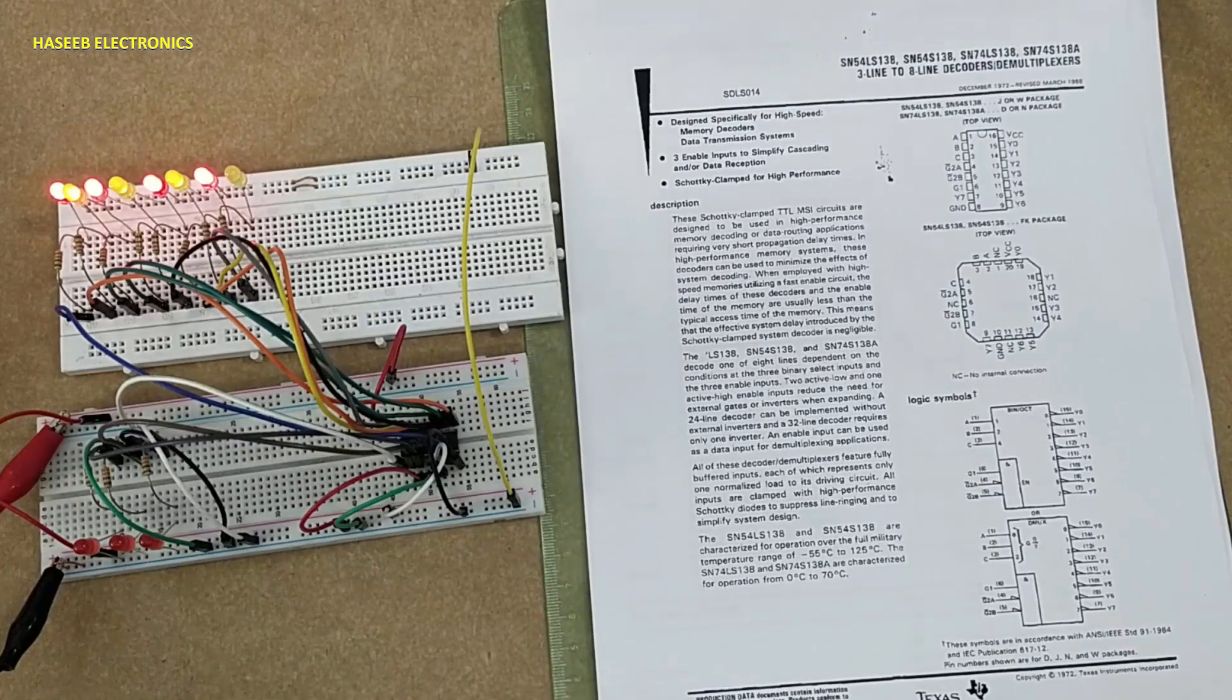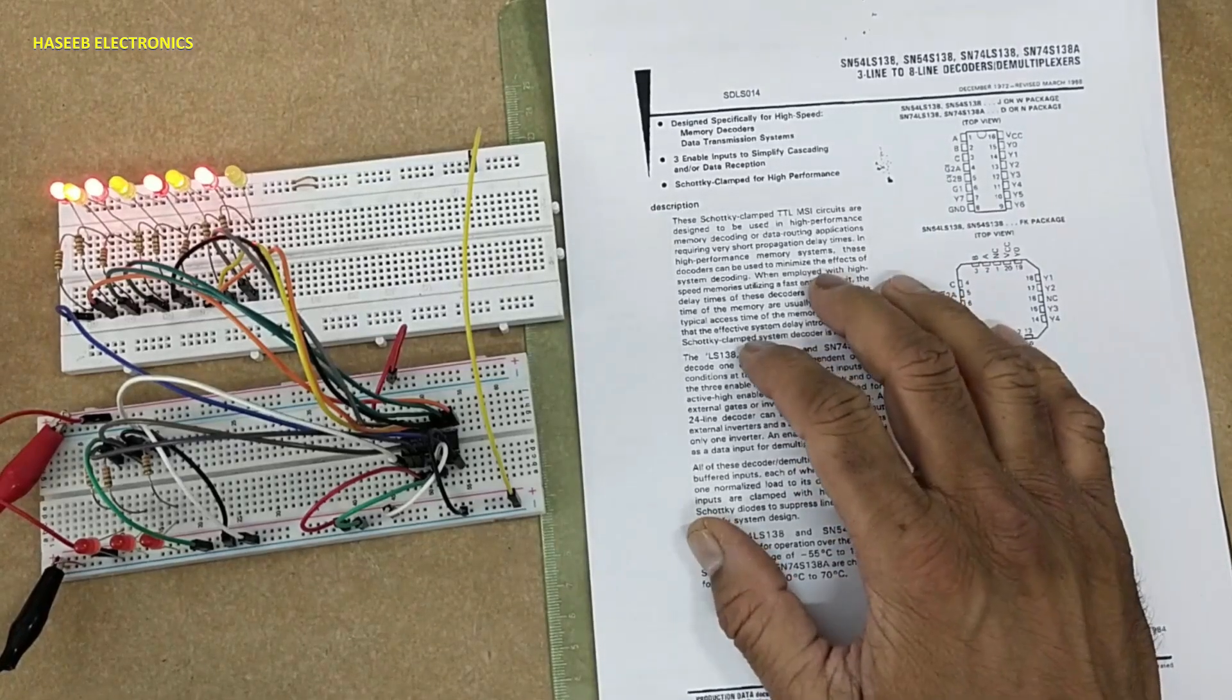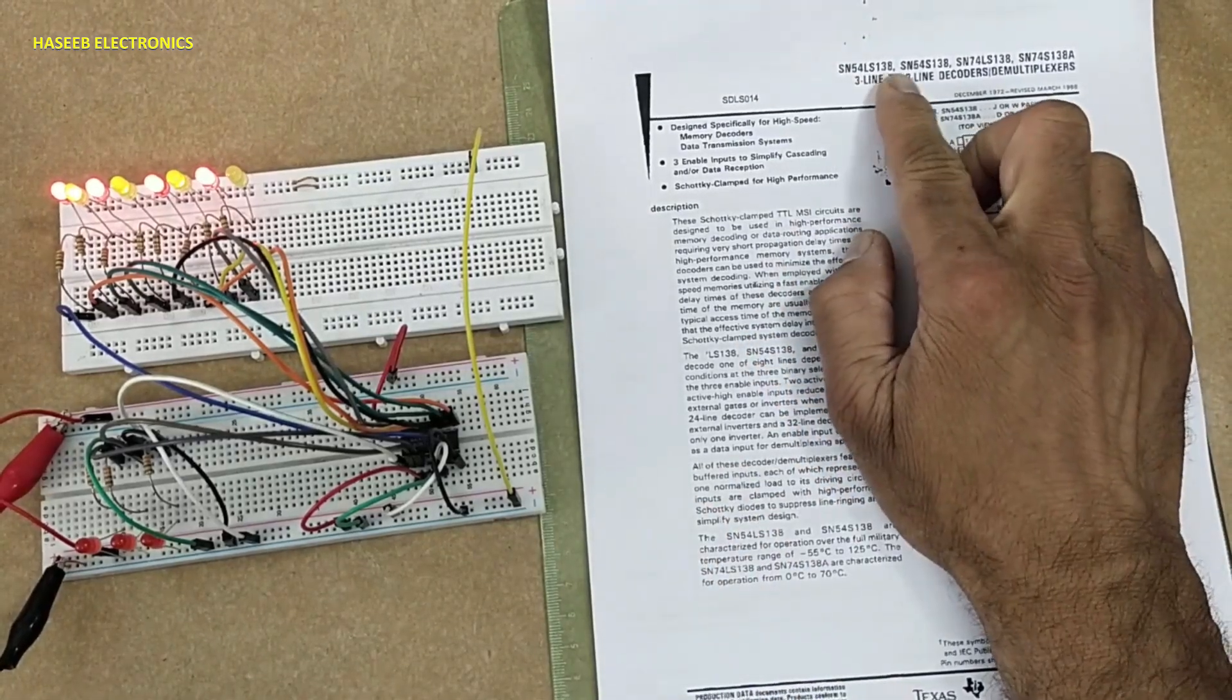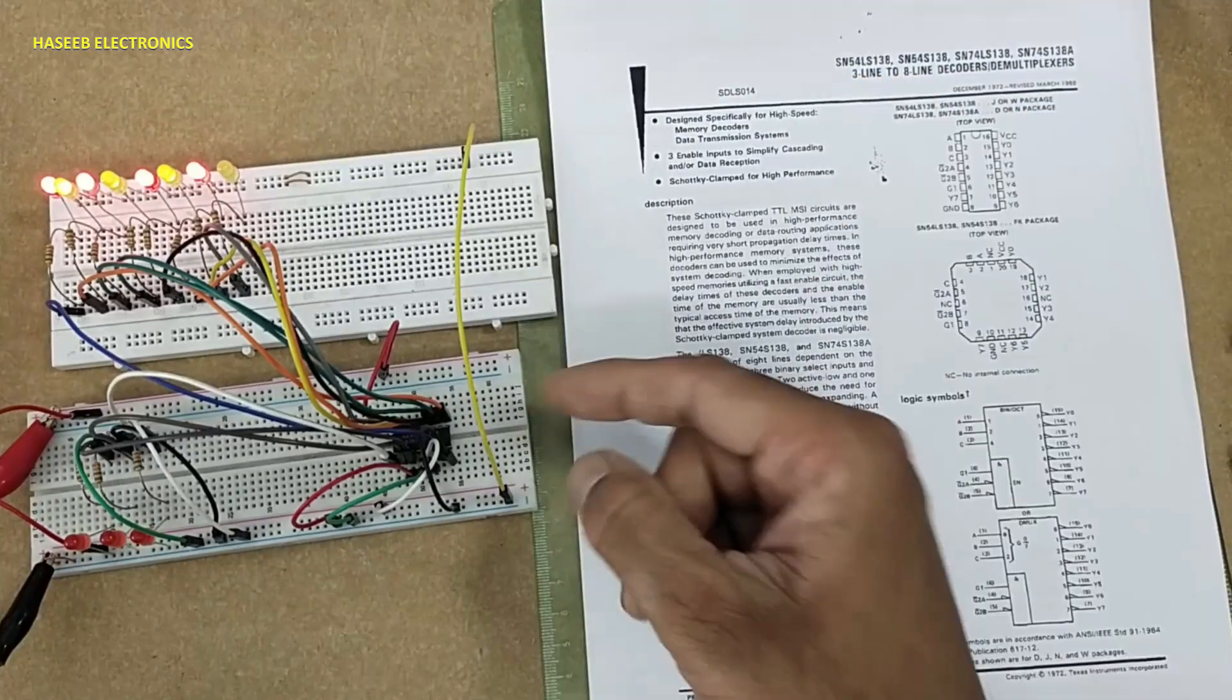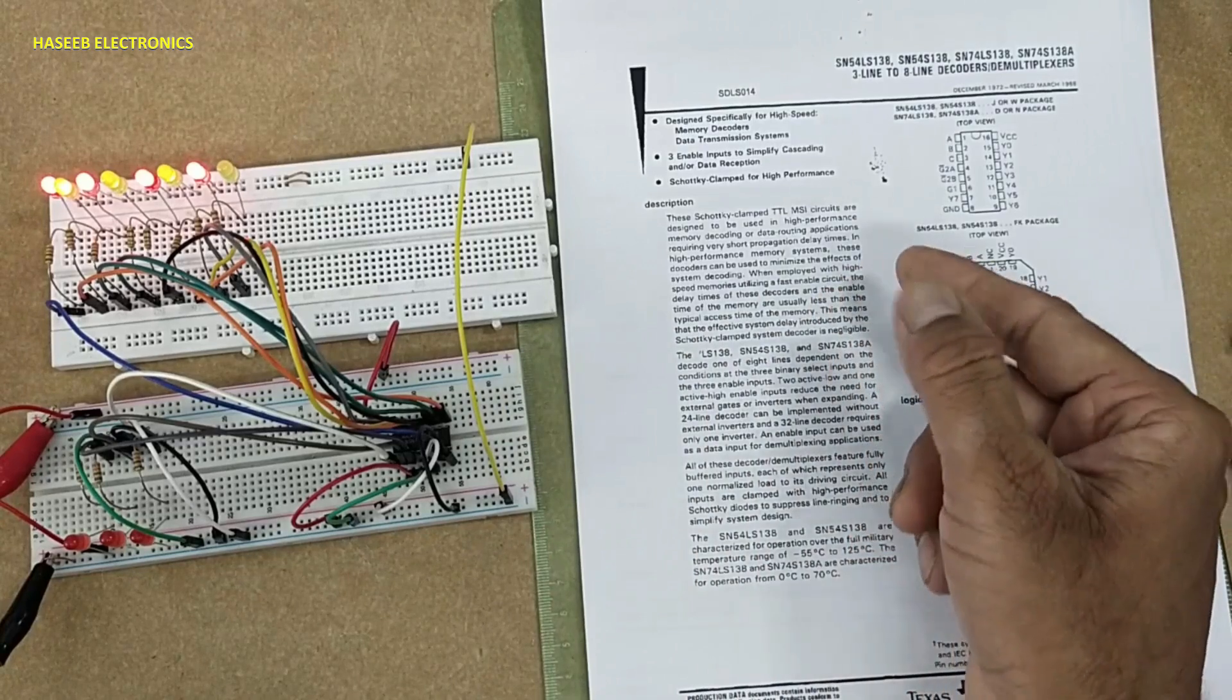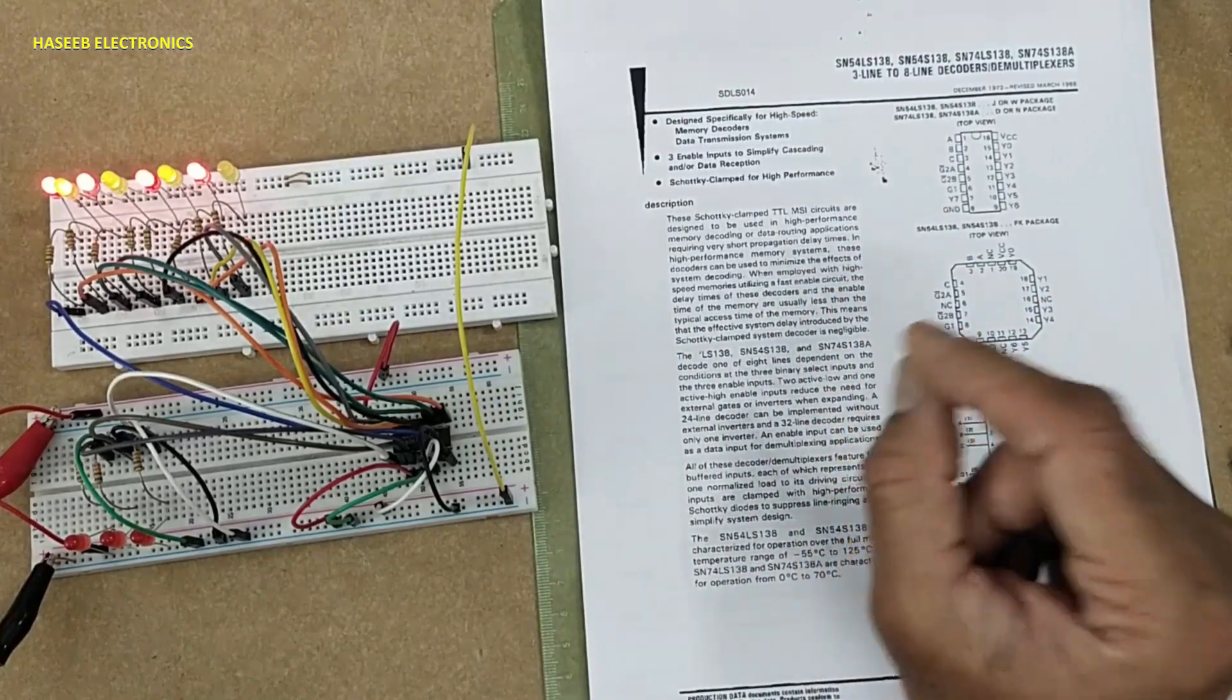Assalamualaikum warahmatullahi wabarakatuh, friends. Welcome back to my channel. Today we are discussing the 74138 or 54138, which is a three-to-eight line decoder address selector.